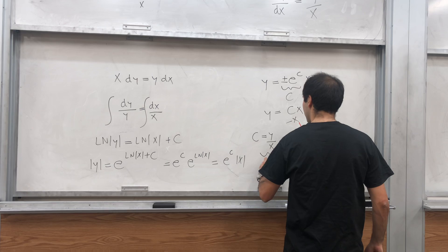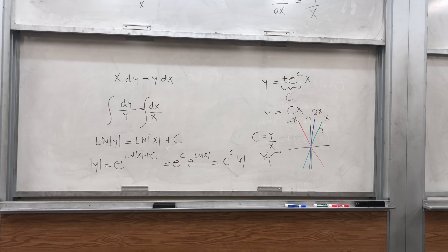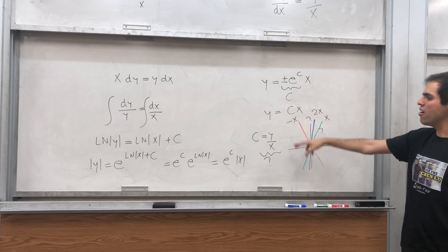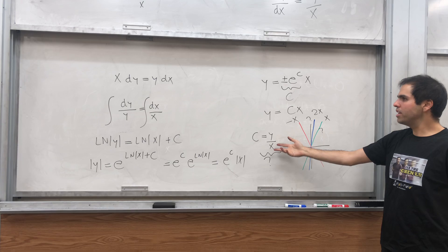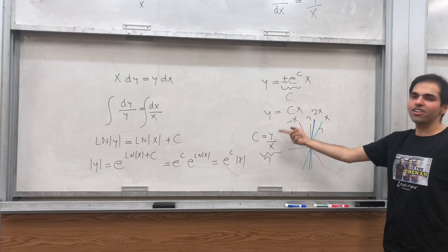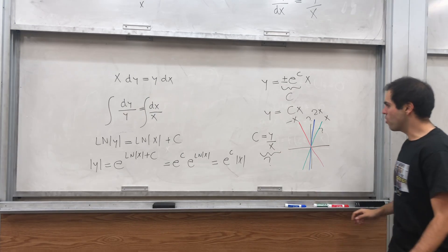And that becomes a variable, question mark, and then what is the solution? Well, again, the solution is characterized by being constant on each line. So really, the answer is any function of this variable, y over x.